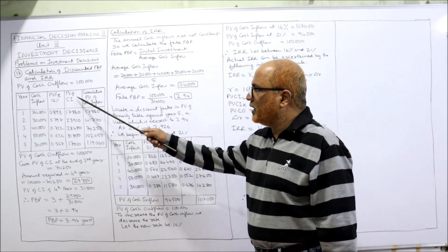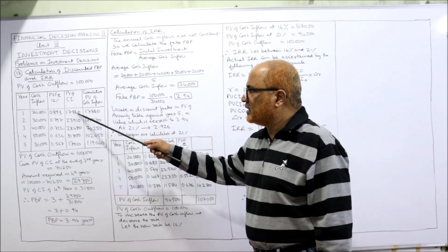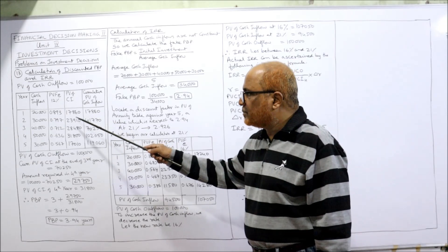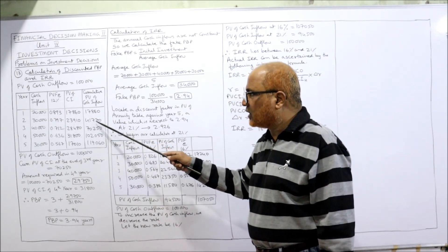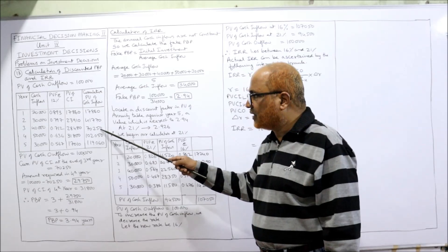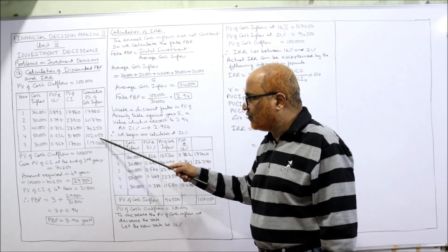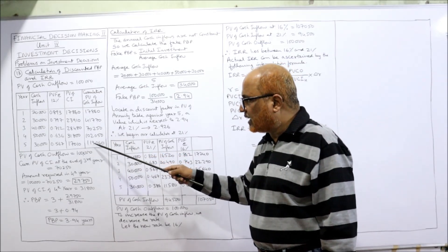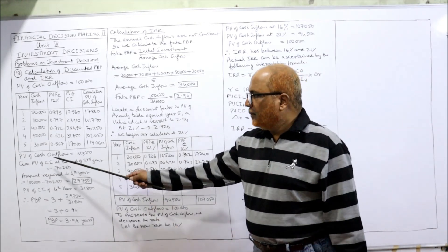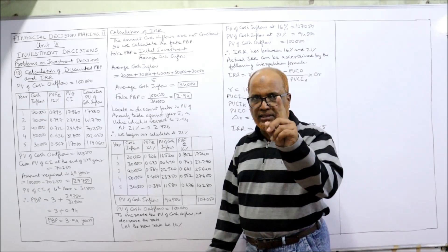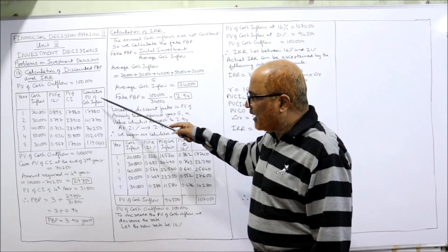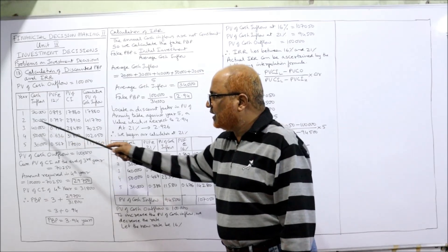Cumulative PV of cash inflows: year 1 is 17,860; then 17,860 + 23,910 = 41,770; + 28,480 = 70,250; + 31,800 = 1,02,050; + 17,010 = 1,19,060. The PV of cash outflow is 1,00,000. Now look at where 1,00,000 lies — at the end of year 3 it is 70,250; at the end of year 4 it is 1,02,050.